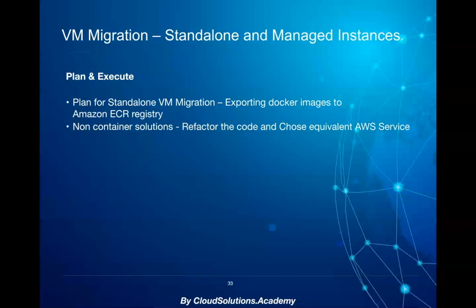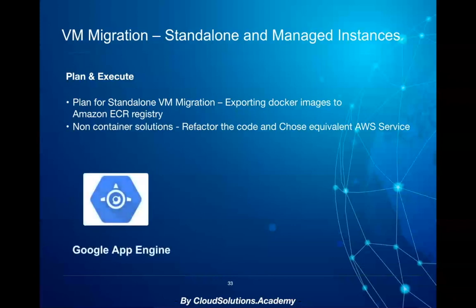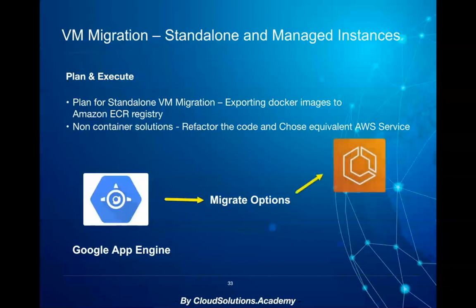For instance, if you're using Google App Engine and it has a lot of SDK dependencies for interacting with Google services, and you're trying to port that application to AWS cloud, you first need to strategize how to migrate. There are multiple options: you can remove the SDK dependency, port the application to a container, and deploy it in AWS.